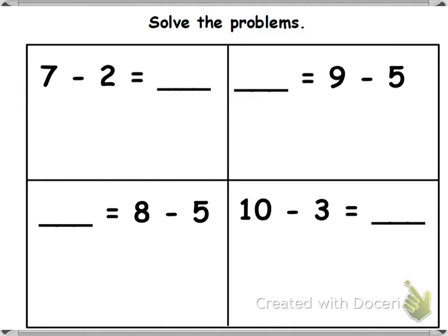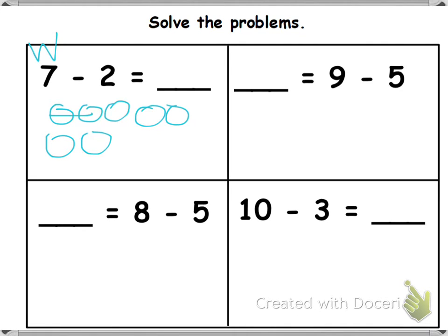So this will show 7 minus 2 equals blank. What we know is 7 is our whole, so we're going to draw our whole. So we're going to draw 7. The minus sign says take away and then it's 2. So we're going to take away 2. Take away 2, circle the rest. 3, 4, 5.